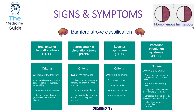TACS, PACS, and LACS all involve the anterior circulation, whereas POCS involves the posterior circulation. For a posterior circulation stroke, the patient only needs to show one of the following: a cranial nerve palsy with contralateral motor or sensory deficit, bilateral motor or sensory deficit, conjugate eye movement disorder such as gaze palsy, cerebellar dysfunction like ataxia or nystagmus or vertigo, or an isolated homonymous hemianopia.